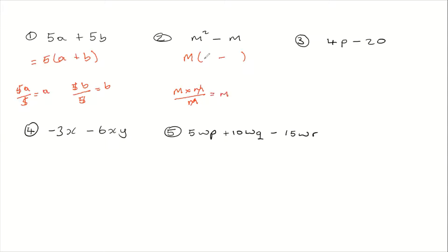And then the second term, which is m divided by m, that is just going to give us 1. So here we'll put 1. So therefore, when we factorize m squared minus m, our answer will be m times (m minus 1).